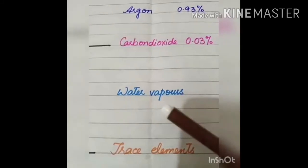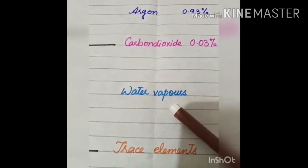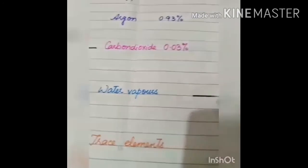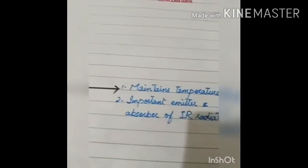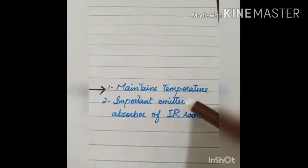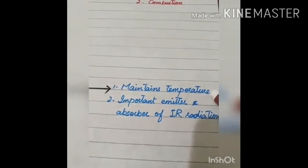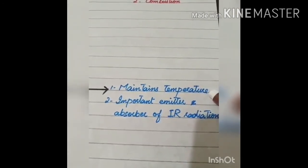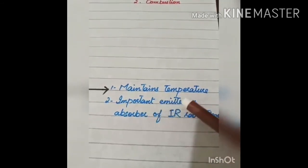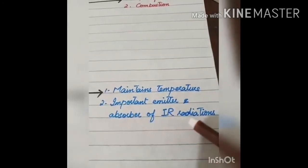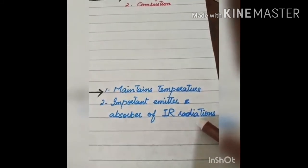Next important component of atmosphere is water vapours. These are also important in the atmosphere because they are helpful to maintain the temperature of the earth. How they maintain the temperature because they are important emitter and absorbers of infrared radiations. And by emitting and absorbing infrared radiation, water vapours are helpful to maintain the temperature of earth.